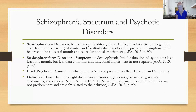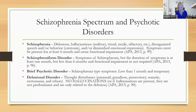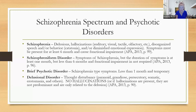Delusional disorder is a thought disturbance — paranoid, grandiose, persecutory (feeling like everybody's out to get you), somatic (believing you have cancer or some illness with no medical evidence), and erotomanic (thinking people are in love with you). The key is no hallucinations except those consistent with the delusion. So if I'm paranoid, maybe I hear people whispering and think people are talking about me, but I don't have any other types of hallucinations. If I did, then we're moving over to the schizophrenia category.